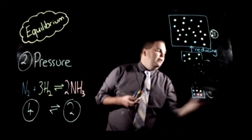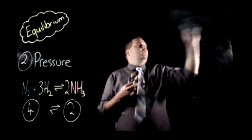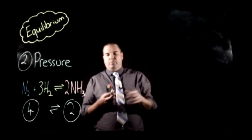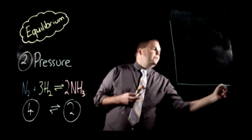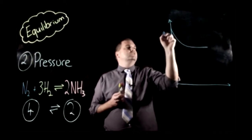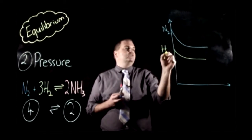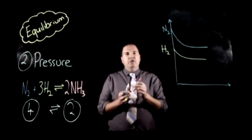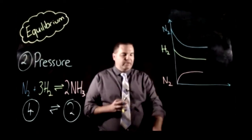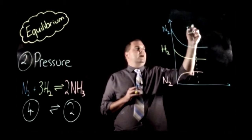So what we're going to do now is graph what this looks like. I'm going to use the Haber process to graph what happens when you change the pressure. Here's our graph - we're going to start initially with some nitrogen and some hydrogen, and initially we have no ammonia but we form it. So we have established an equilibrium where the slope of all of our species is zero.